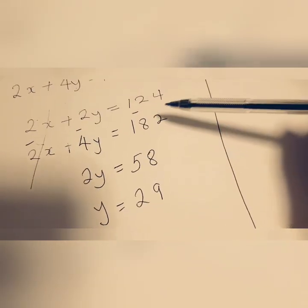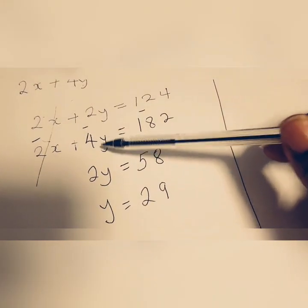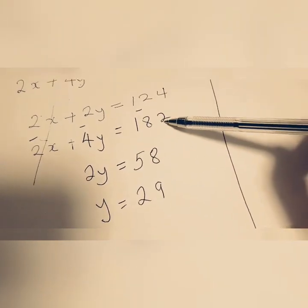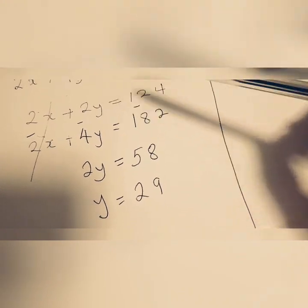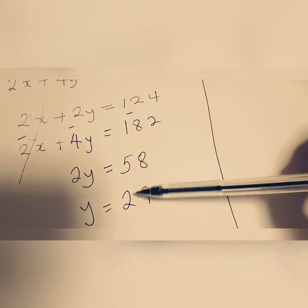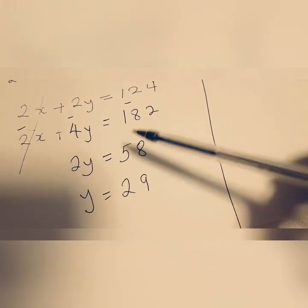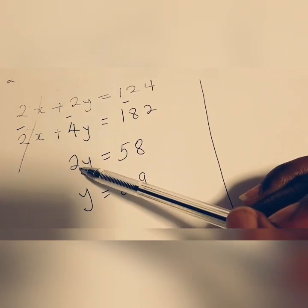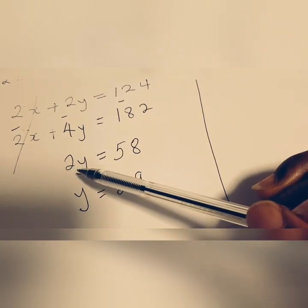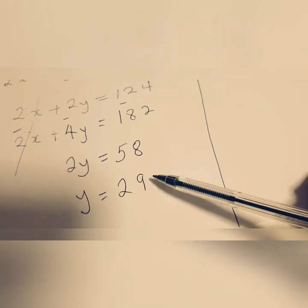So it doesn't matter, but what really matters is if you're doing 4y take away 2y, you must go the same direction. So if we go from the bottom to the top, we must go from the bottom to the top on this part as well. So our y is 29 in this case, because you can do 58 divided by 2 to get your y which is 29.